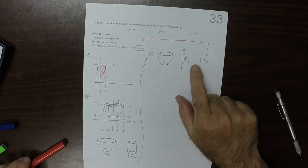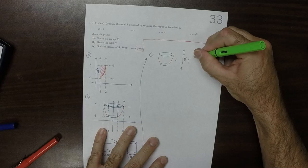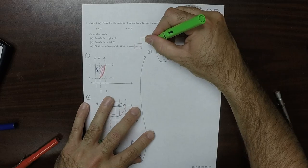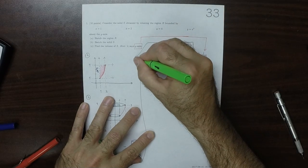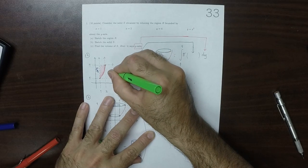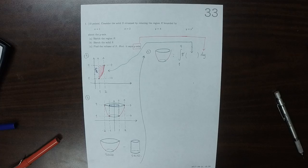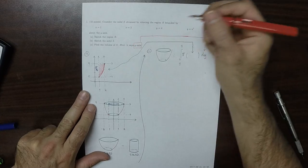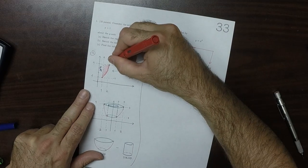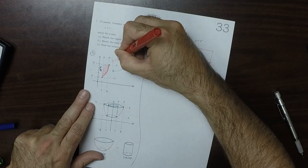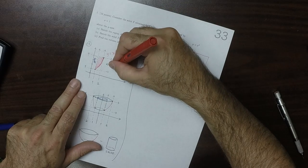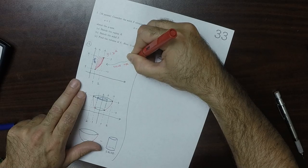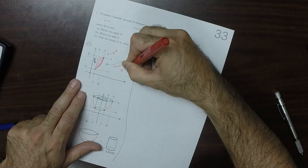And then the question about what goes in here, is we need to figure out what is the equation of that as a function of Y. So it is Y is X squared, but rather we want to solve for X. And doing that you get X is the square root of Y.